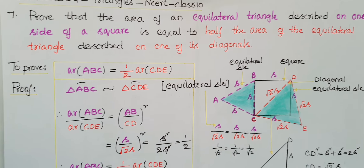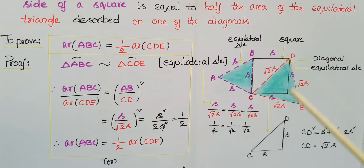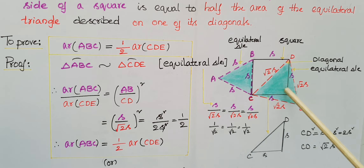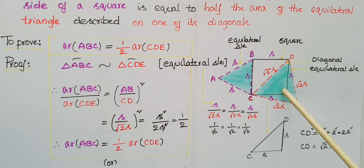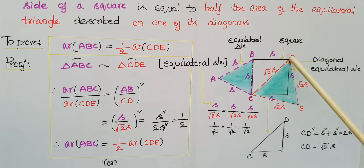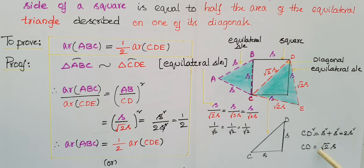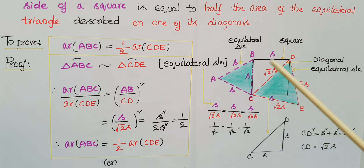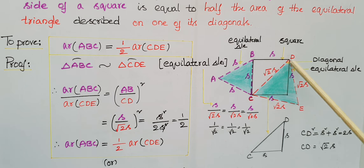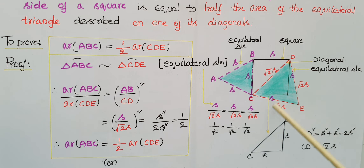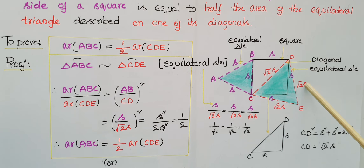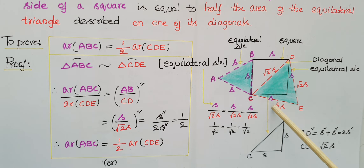We calculate the diagonal CD using Pythagoras theorem. Since the angle of the square is 90 degrees, CD² = S² + S². So CD = √(2S²) = √2 · S. Therefore the side of equilateral triangle CDE is √2S, so each side of triangle CDE is also √2S.